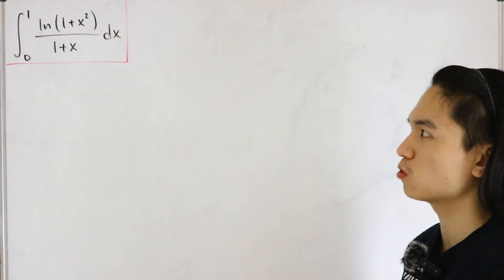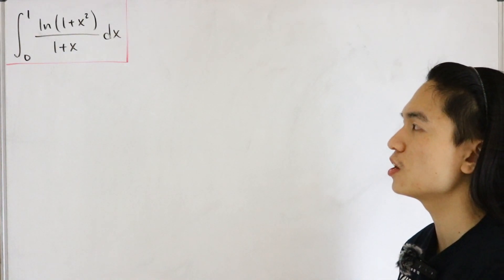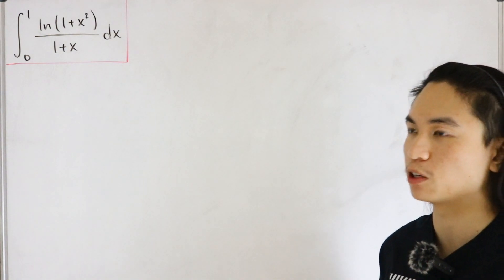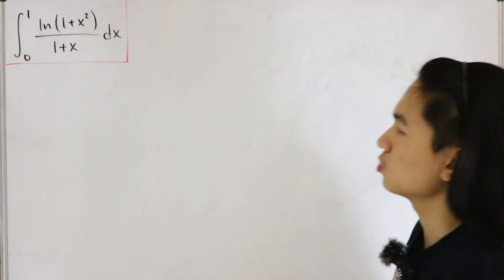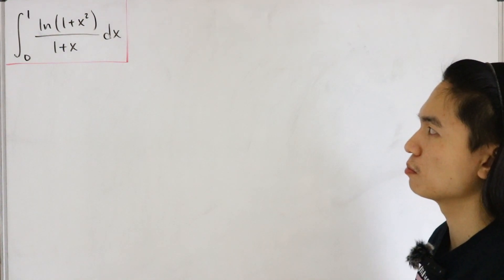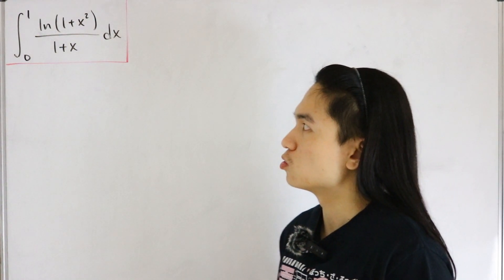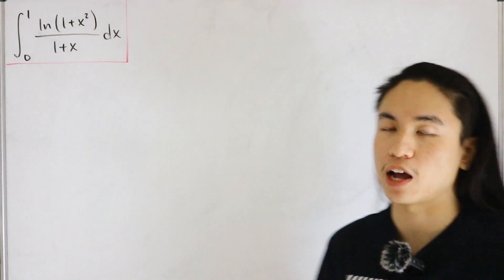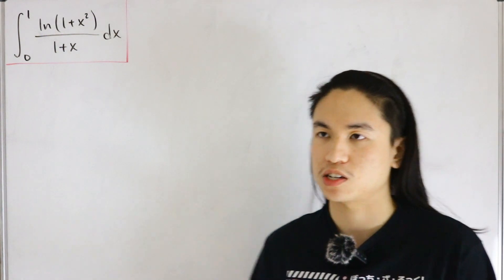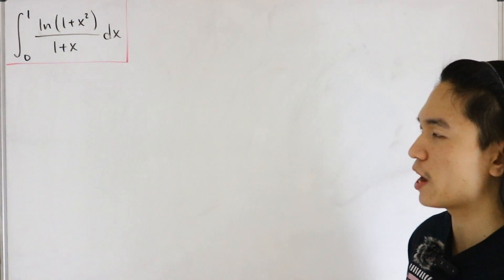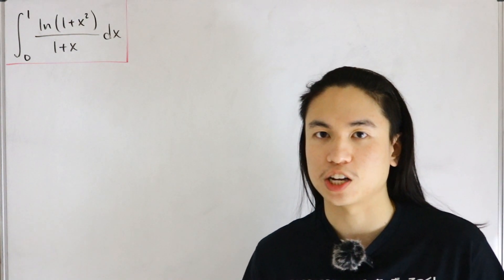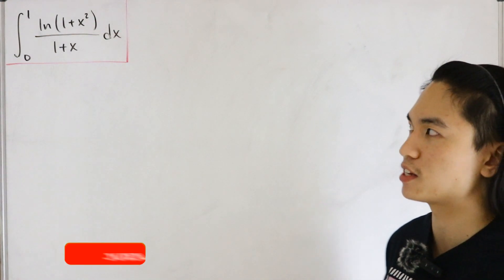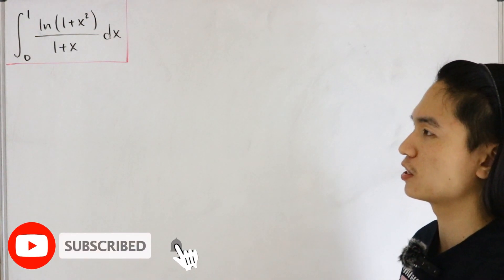Today we have a definite integral from zero to one of a basic-looking integrand — loosely speaking — which is the natural log of one plus x squared divided by one plus x, dx. The strategy here is one I've covered in several videos: solve for a generalization of the integral, then plug that value back in to get the actual answer.